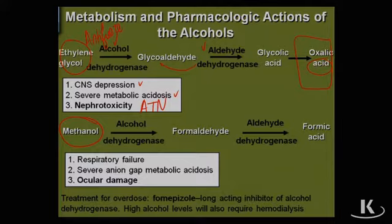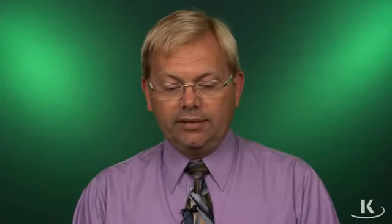For methanol, methanol is often referred to as wood alcohol. It is often a contaminant of alcoholic beverages, particularly when adults make their own alcohol in their own little wood barrels, and in the process of putting yeast and fermenting the sugars in the barrel, methanol forms as a by-product.